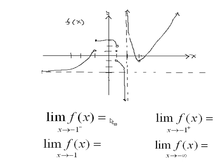But we found this one went to 1 and this one went to 3, so they're going to different numbers. So we say this limit does not exist.